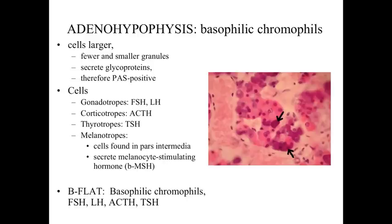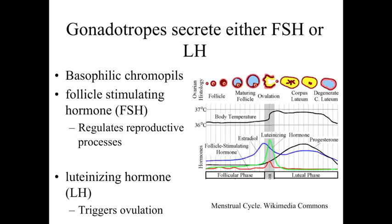Looking at the characteristics of these cells: the gonadotropes are going to secrete either FSH, follicle stimulating hormone, which regulates reproductive processes in both the male and female reproductive tract, or luteinizing hormone, LH, which triggers ovulation. The gonadotropes are not going to secrete both; they secrete either FSH or LH. We'll talk about the functions of FSH and LH when we discuss the reproductive system over the next couple of lectures.